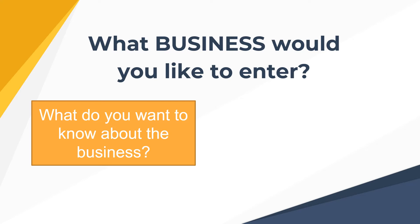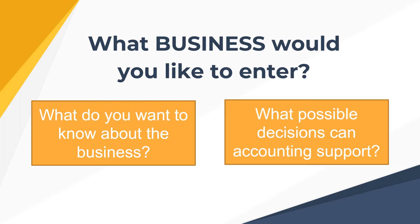If you're the owner, what do you want to know about the business? It can either be: how much income have I earned for a certain period, how much do I owe my suppliers, or how much is the value of my inventory — things that as an owner you'd want to know, like whether you have receivables or outstanding payables. Also, as an owner, what possible decisions can accounting support? We defined accounting as helpful in decision making.